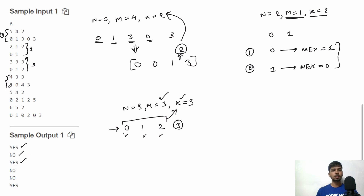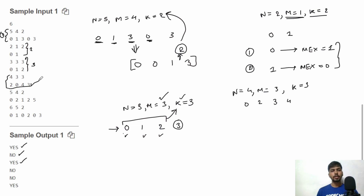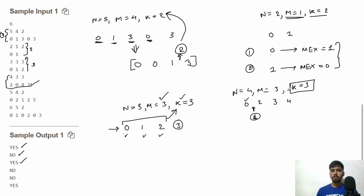Test case 4: N=4, M=3, K=3, array is [0, 2, 3, 4] (sorted). Here 1 is not present. Since 1 is missing and less than K=3, we can never achieve a MEX greater than 1 regardless of our selection. So output is directly NO. You can try the remaining test cases as homework.